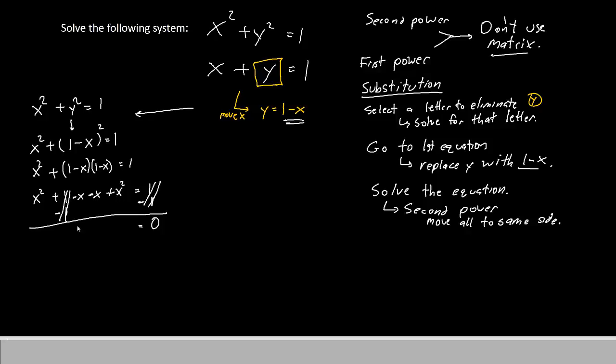Let's see what we have left. We have x squared, and x squared makes 2x squared. Negative x and negative x makes negative 2x equals 0.